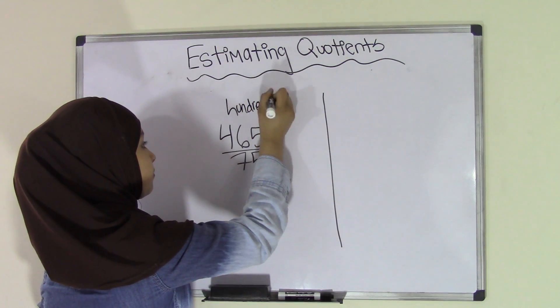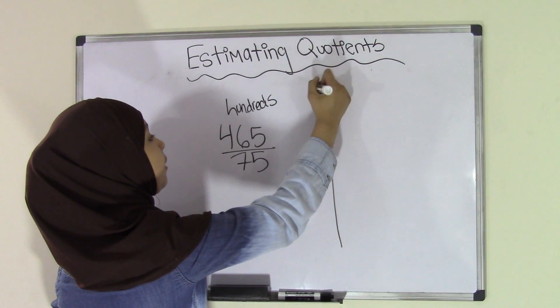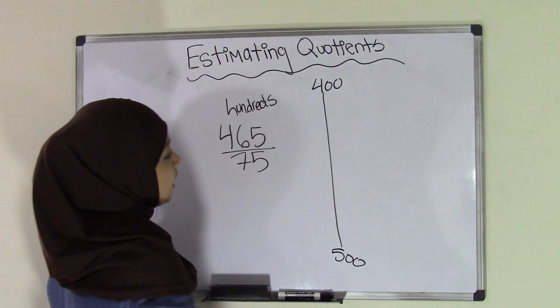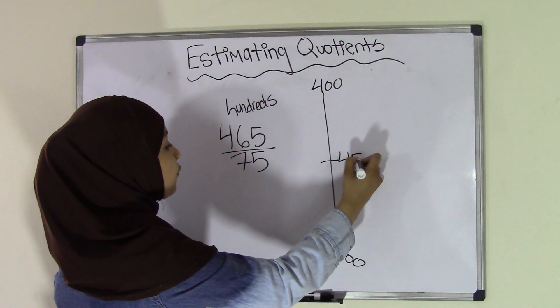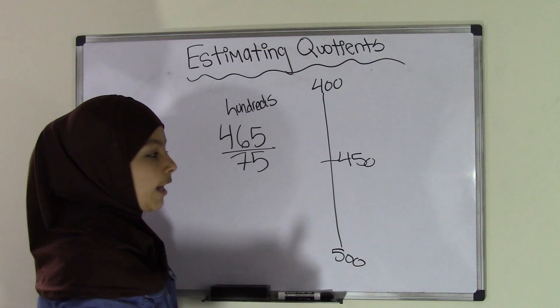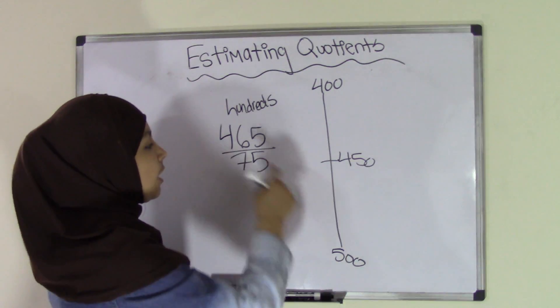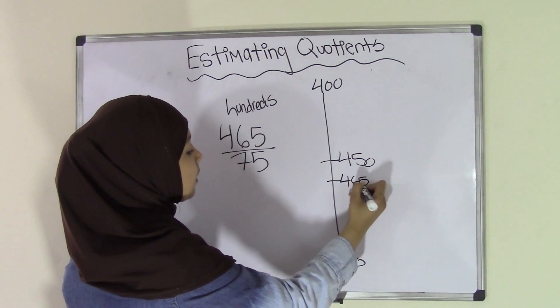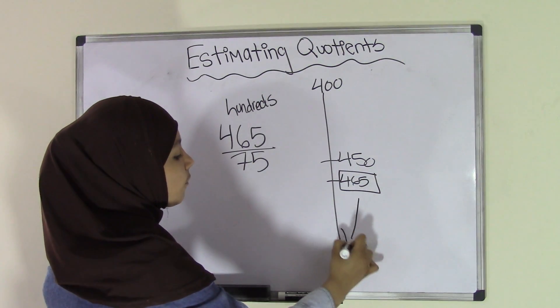So the two nearest hundreds to 465 would be 400 and 500. Now we're going to take a look at 465. So we know that in the middle would be 450. 465 is greater than 450, therefore it's going to be somewhere in this range. So 465 would more likely go over here. That means that 465 is going to round off to 500.